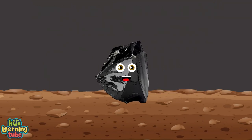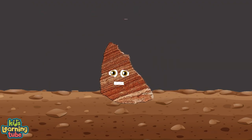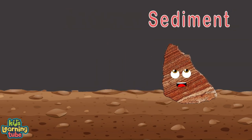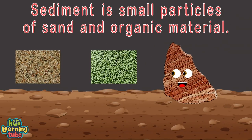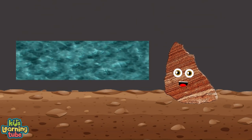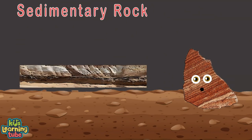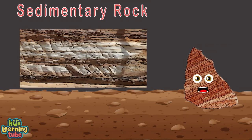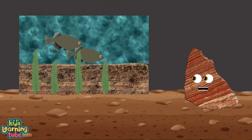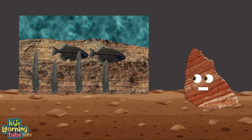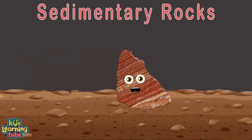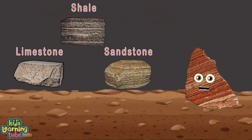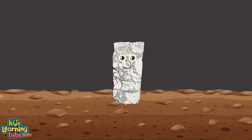I'm a type of rock called sedimentary. Let's break down the meaning of my name. Sediments are small particles of sand or organic material that settle at the bottom of water or land as gravity pulls. Sedimentary rock forms when sediment builds up over time — it's compressed into layers forming rocks. You can find lots of fossils in sedimentary rock when plant and animal remains are squeezed into layers. Examples include limestone, sandstone and shale.